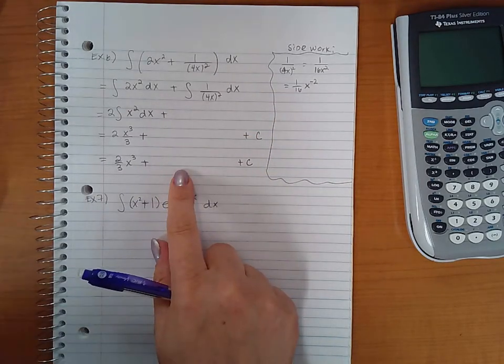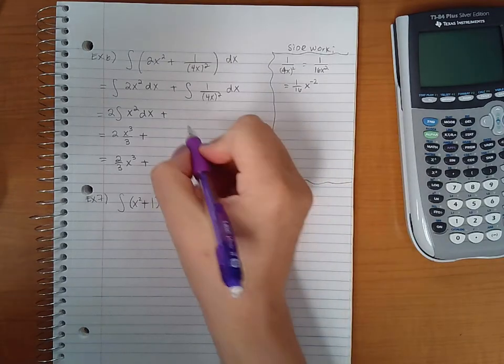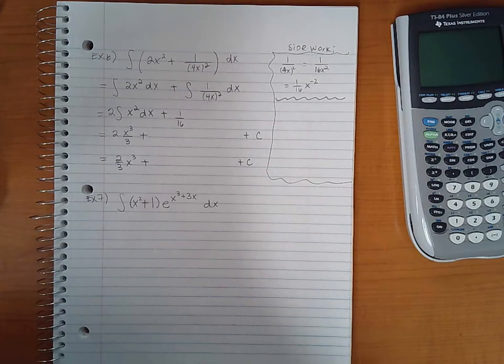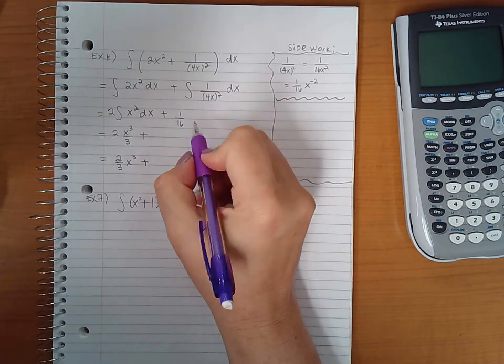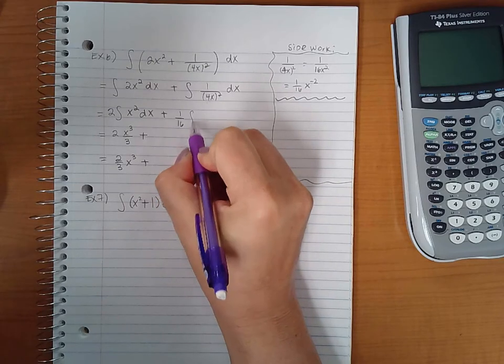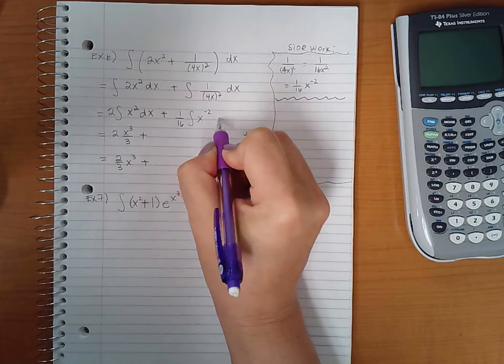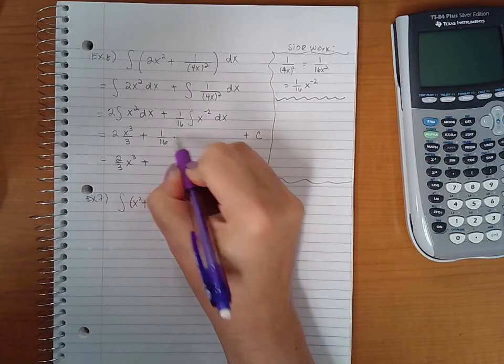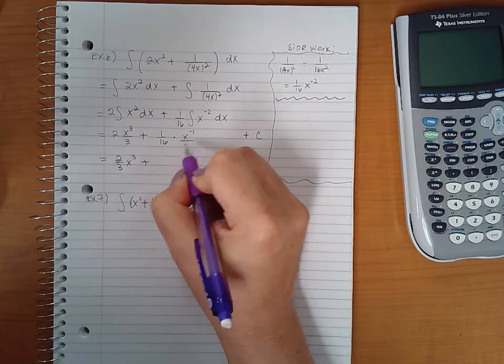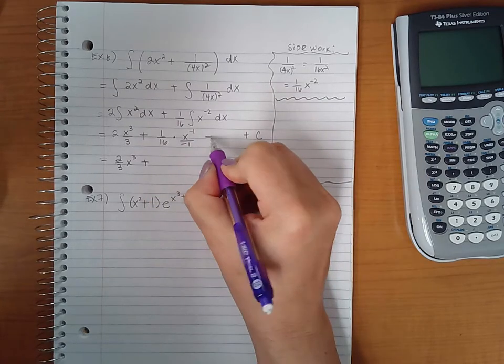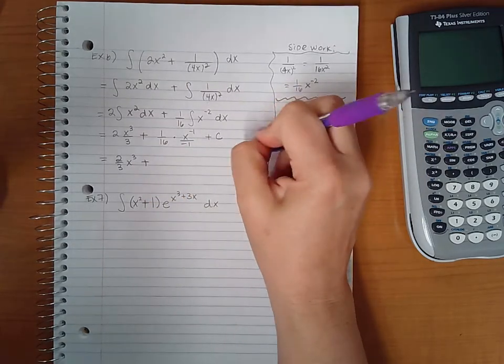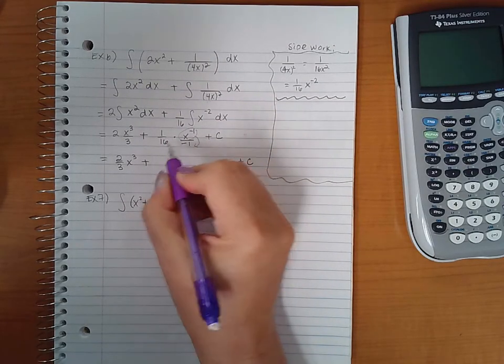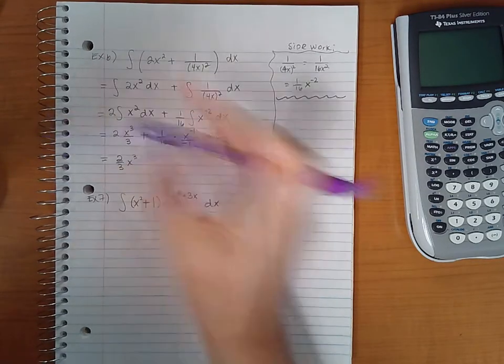So here we've got this, and then we've got the integral of x to the negative two dx. So I get, if I add one I get negative one, and then divide by the new power. I'll bring in that plus c a little bit closer. And then here if I simplify this, this will go downstairs and a positive times a negative will give me a negative one sixteenths over x.